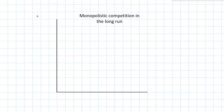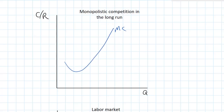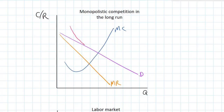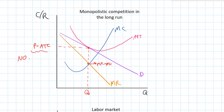A monopolistically competitive firm has some characteristics of perfect competition and some characteristics of monopolies. It is a price maker; therefore, demand is downward sloping and marginal revenue is less than demand. When the firm produces at its profit-maximizing quantity, the price will equal the average total cost. Entry will eliminate profits because there are low entry barriers, and exit will eliminate losses. Therefore, this firm experiences zero economic profits in the long run, but it is still a price maker.